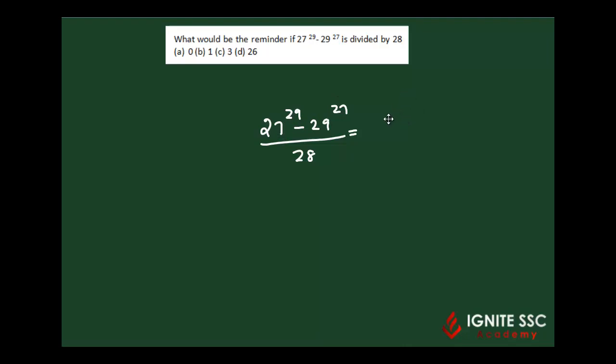So we can rewrite this as (28-1)^29 minus (28+1)^27 whole divided by 28. When 28^29 is divided by 28, the remainder is 0.